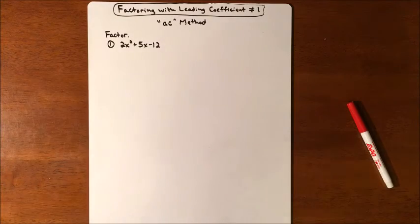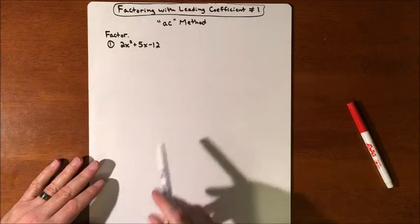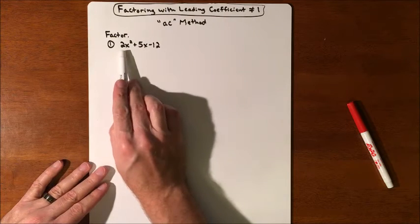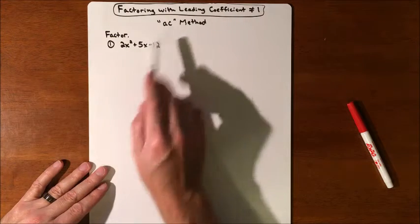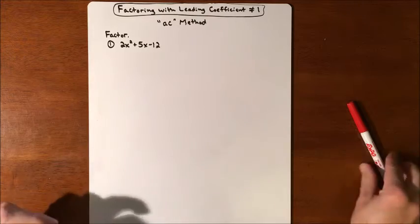In this lesson, we're going to be factoring trinomials with leading coefficients that are not equal to 1. So that right there is going to be anything but 1. And this method is called the AC method.